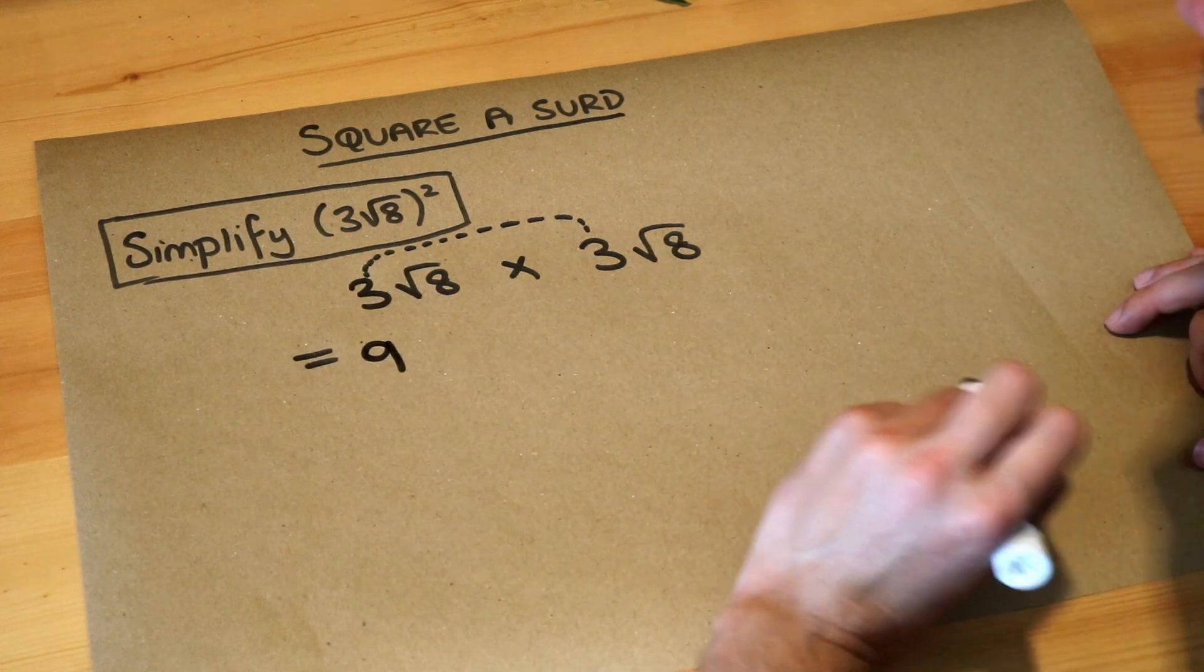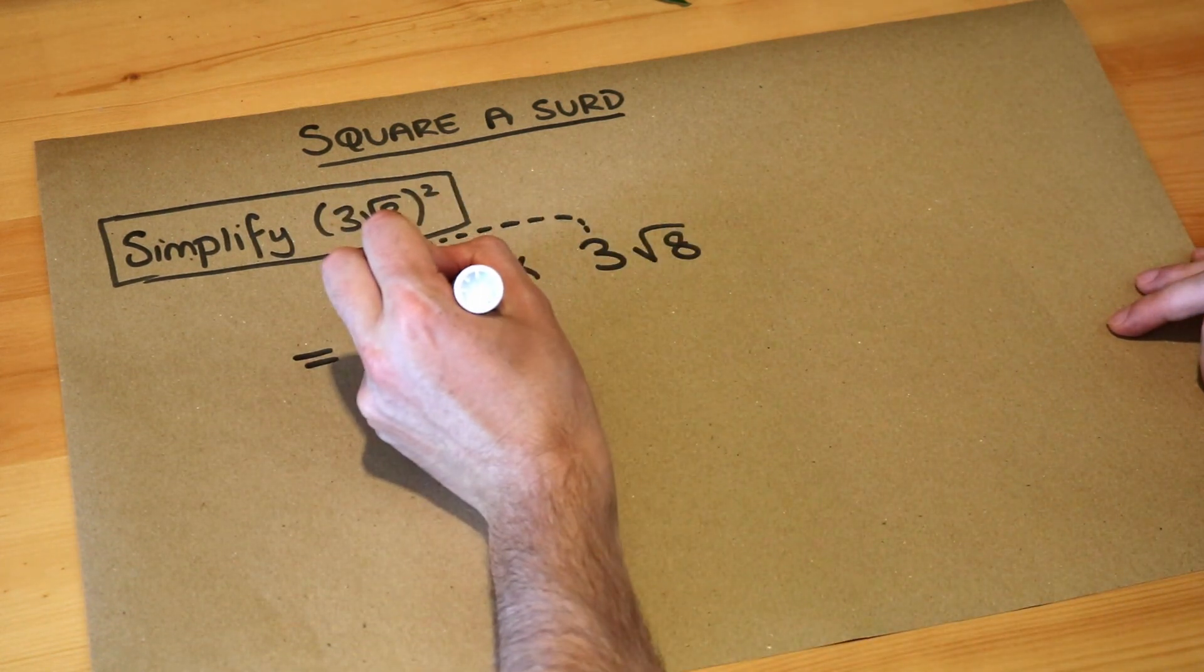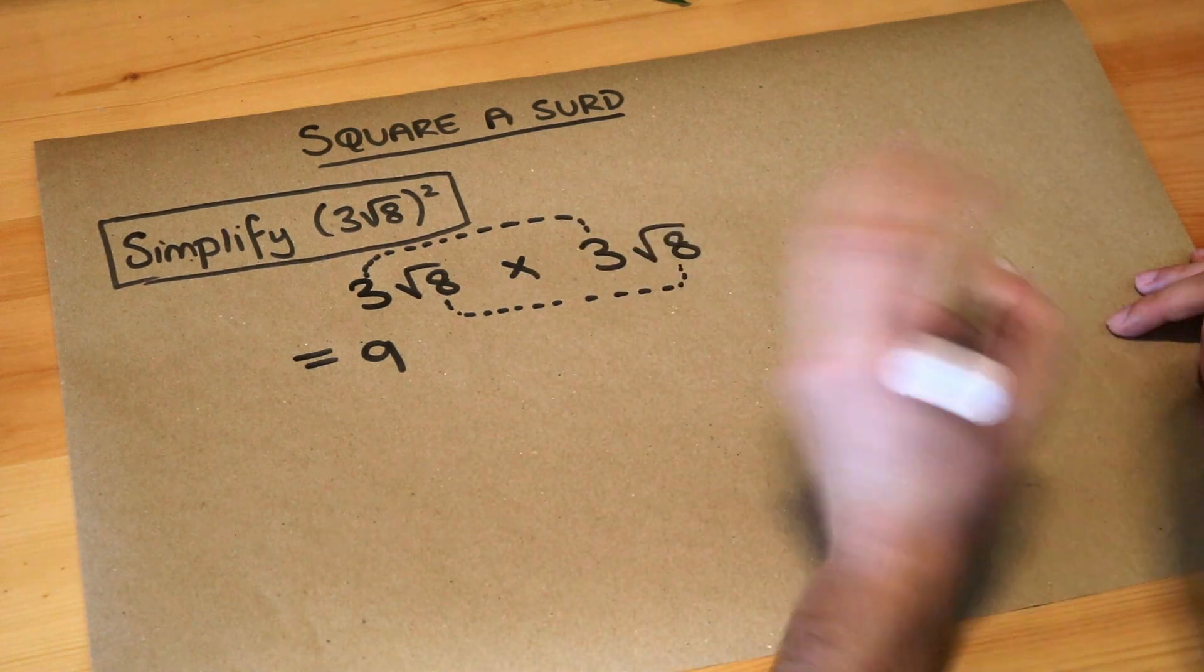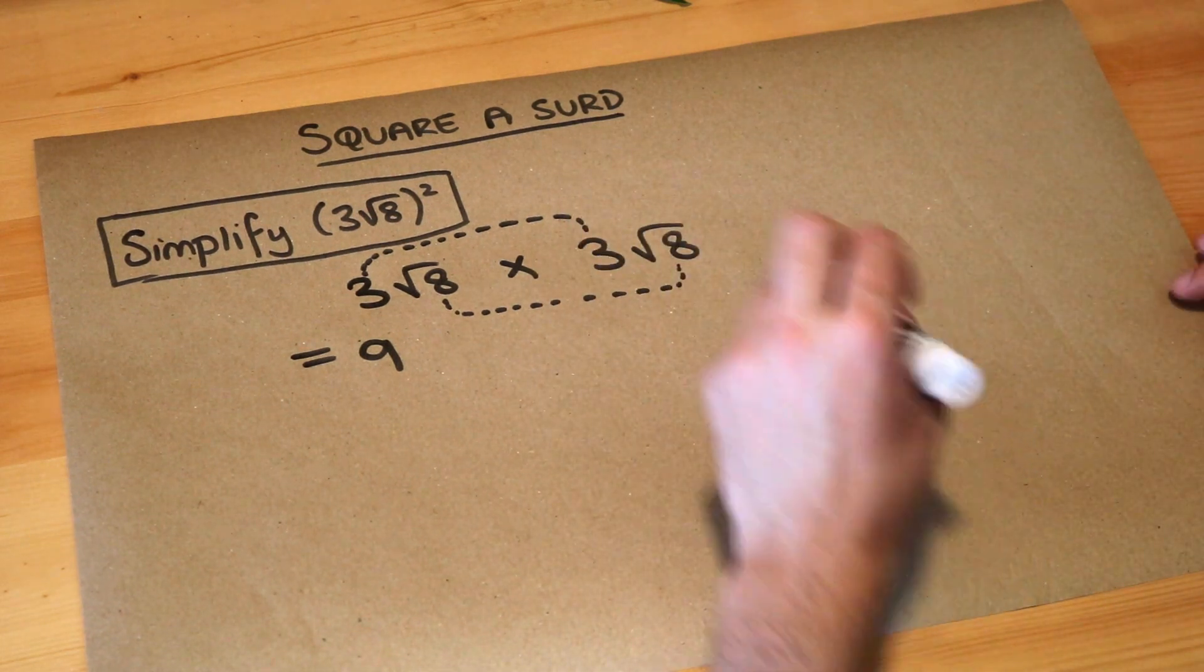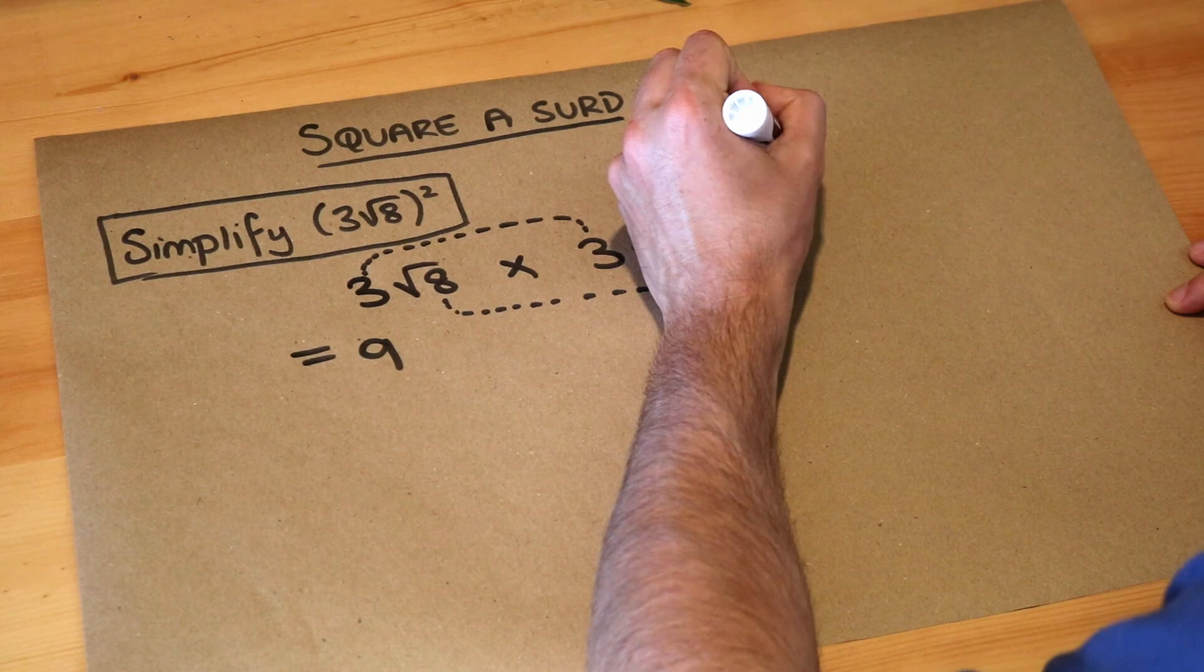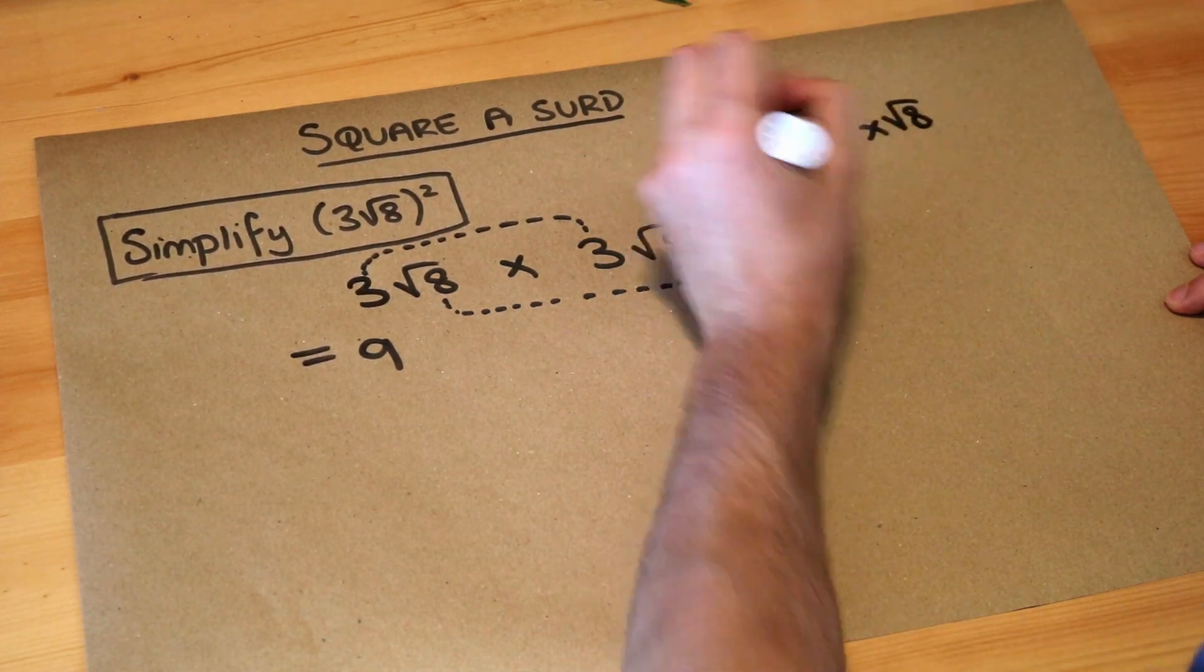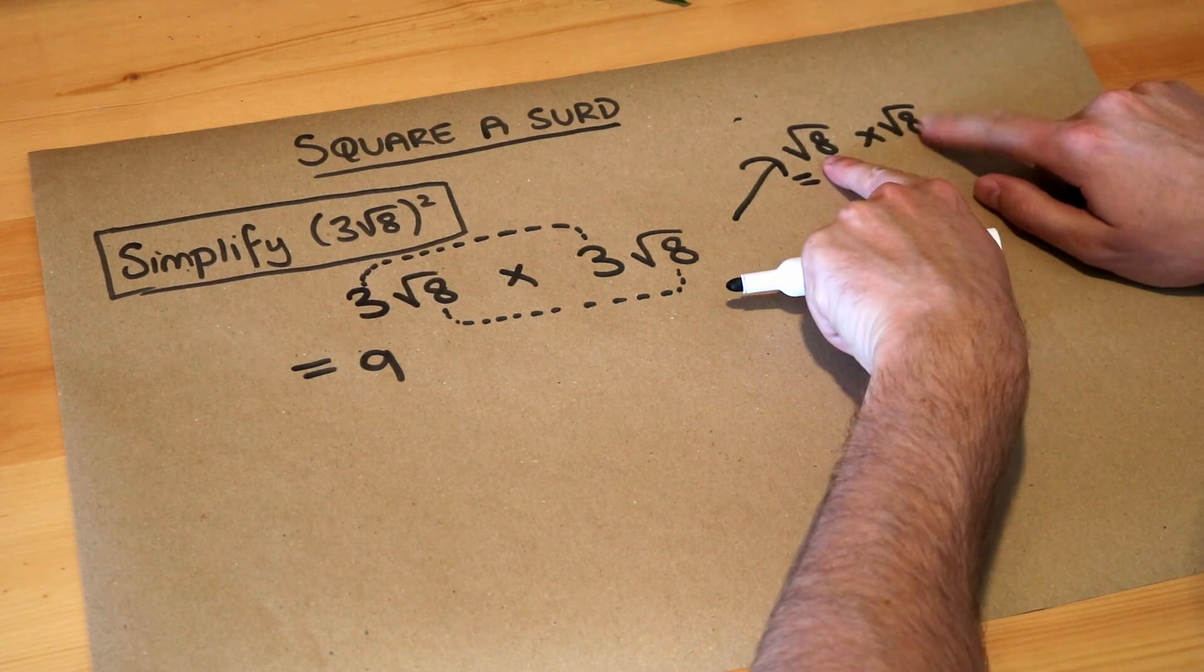And we multiply the surds together, so we've got root 8 times root 8. Well that's just 8, and the reason is if we do separately root 8 times root 8, we know when we multiply a surd by a surd we just multiply those numbers together.